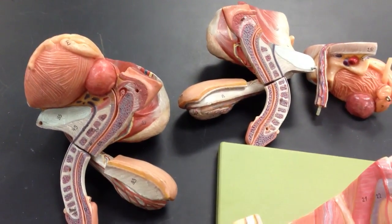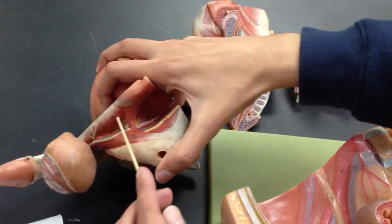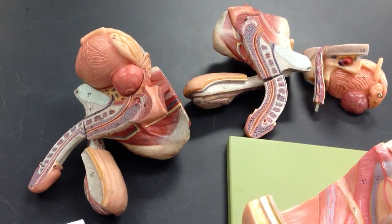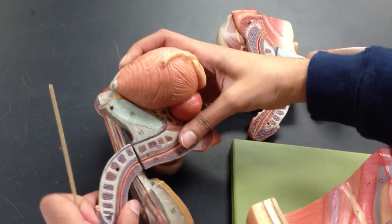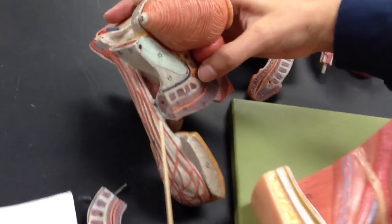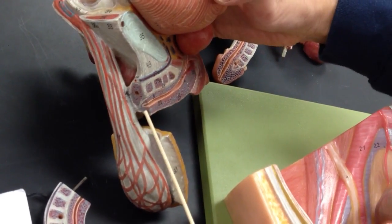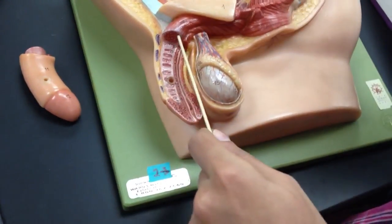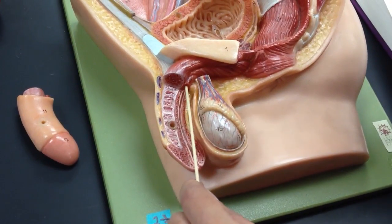Muscles: you got your bulbospongiosus right here, ischiocavernosus right there. Corpora cavernosa is going to be right here and the corpus spongiosum is right there. On this model, corpora cavernosa and corpus spongiosum.